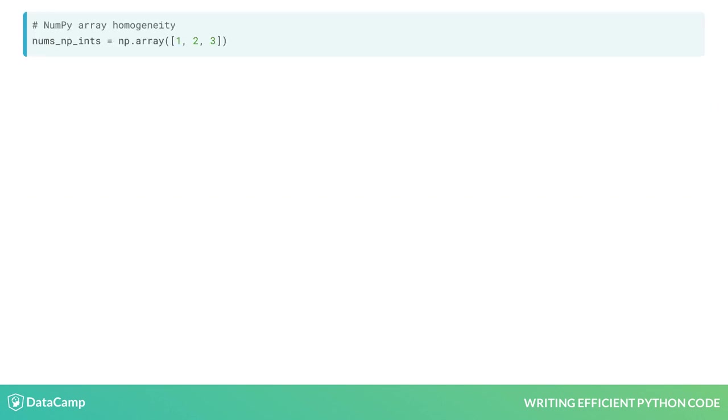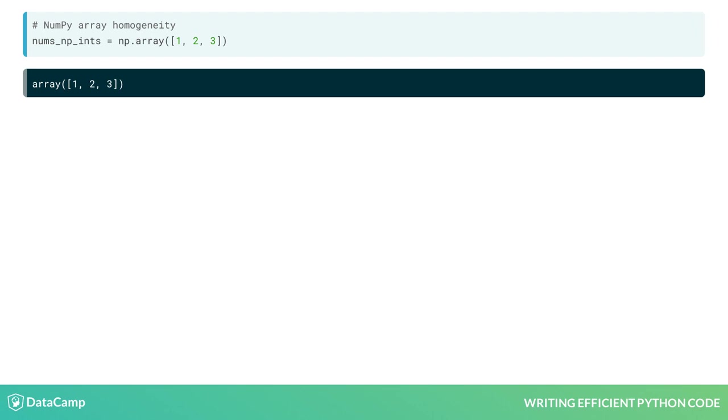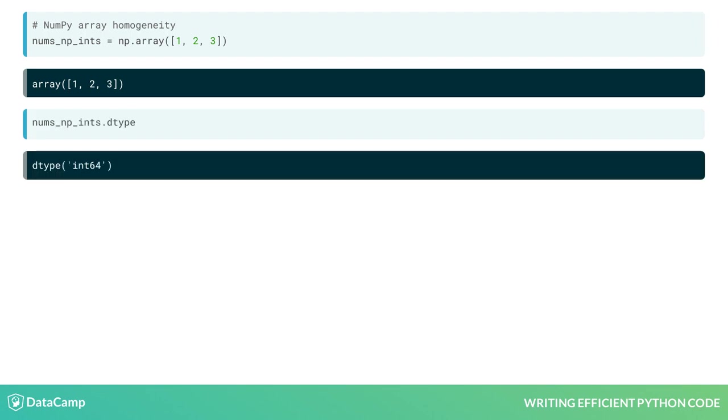NumPy arrays are homogeneous, which means that they must contain elements of the same type. We can see the type of each element using the .dtype method. Suppose we created an array using a mixture of types.